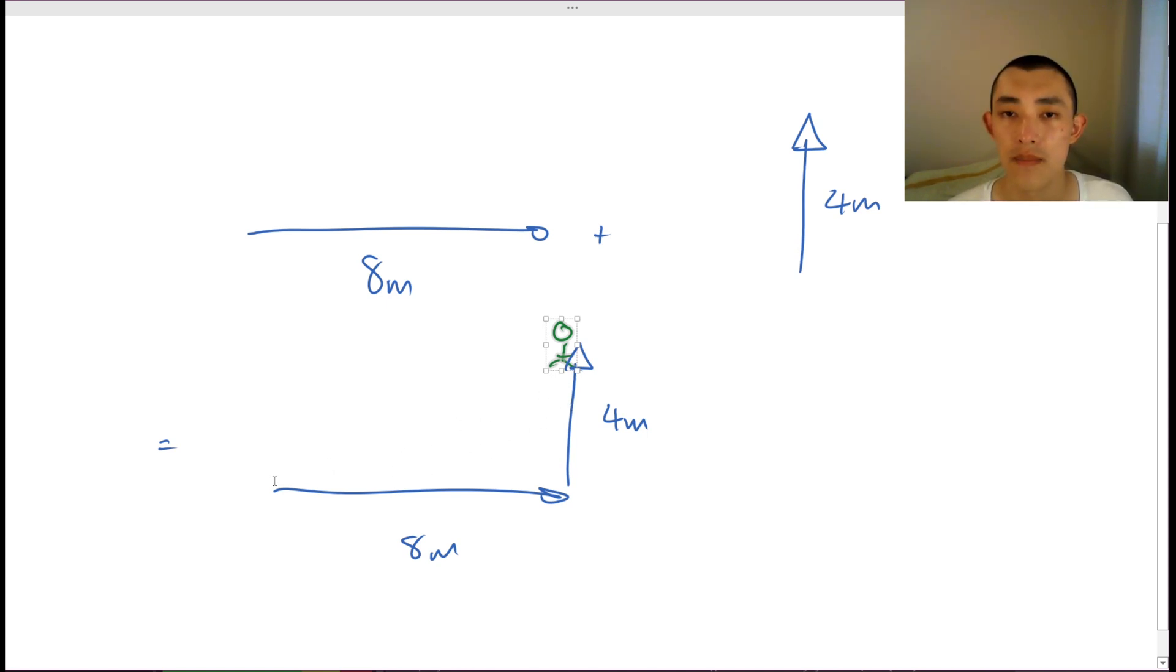Now that we can see this, we can now begin to determine his total displacement. So we can see that this should be our total displacement. And our total displacement is, again, the total distance from where we started to where we ended.